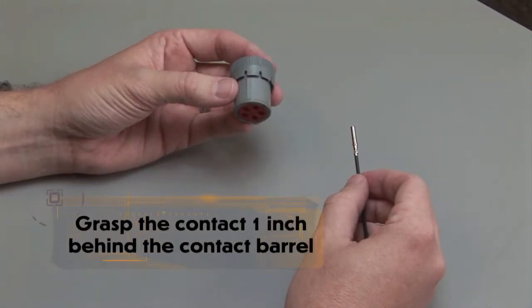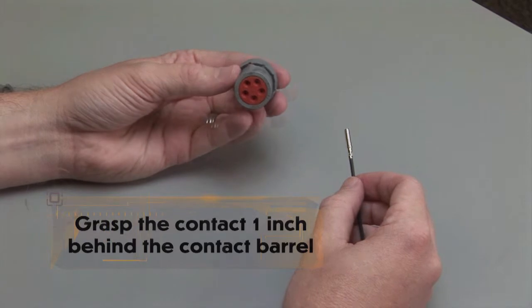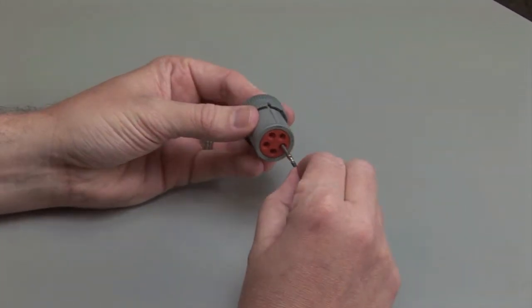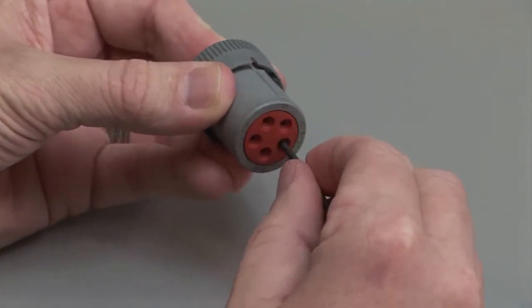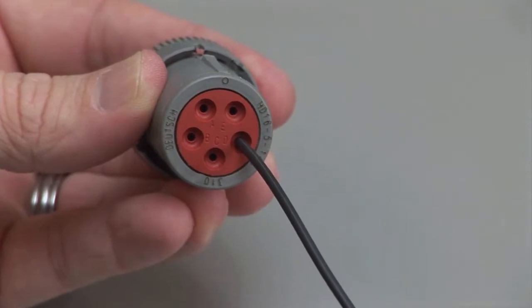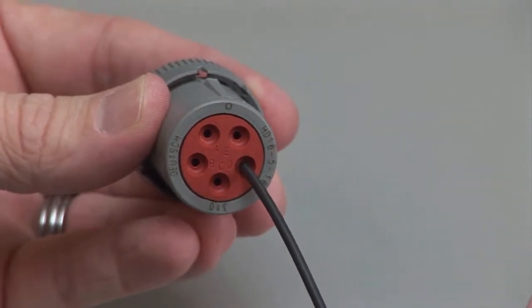Grasp the crimped contact approximately one inch behind the contact barrel. Hold the connector with the rear grommet facing you. Push the contact straight into the rear grommet until you hear and feel a click. A slight tug will confirm that the contact is properly locked into place.